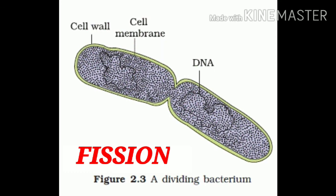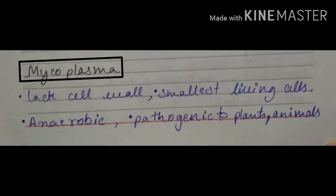The next topic from NCERT is the division of bacteria, which occurs mainly by fission. In the diagram, we can see a single bacterium dividing into two daughter cells by the process of fission. Another important topic that NCERT includes under bacteria is mycoplasma. These are organisms which lack a cell wall, they are very small living cells, anaerobic, and may be pathogenic to plants and animals. For example, diseases like pneumonia are caused by organisms which fall under the category of mycoplasma.